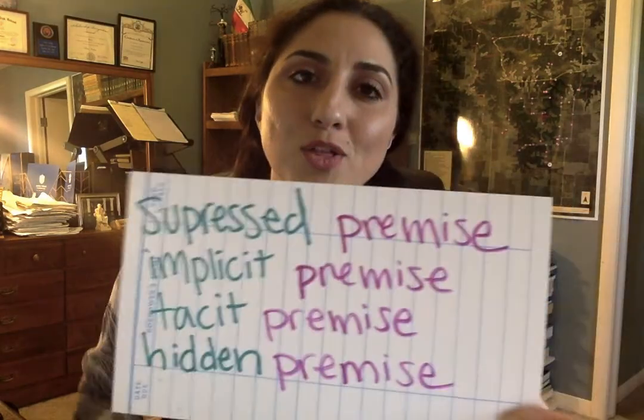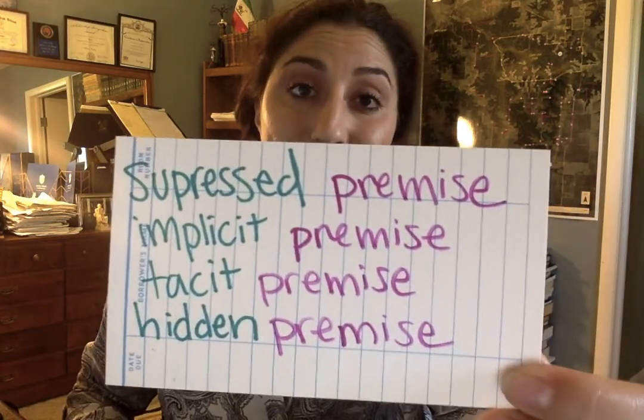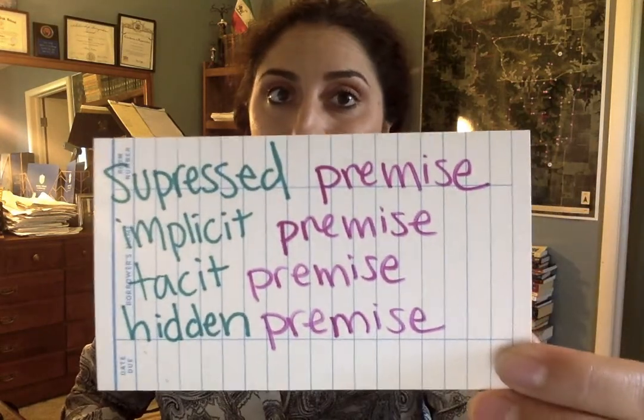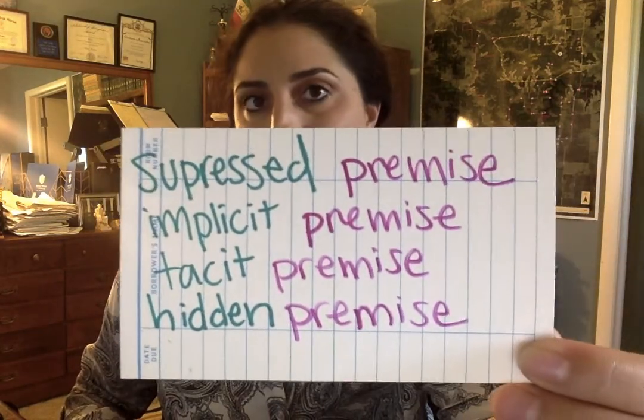The part of an argument that leads to a conclusion is the premise. Sometimes a conclusion is supported by many premises put together. Some premises are not explicitly stated — you might call those an implicit assumption, or a number of other things.